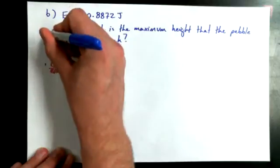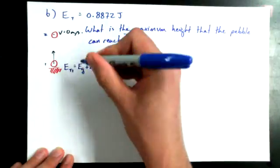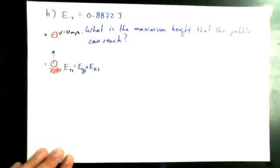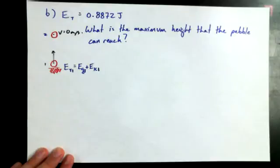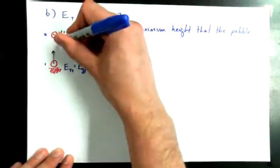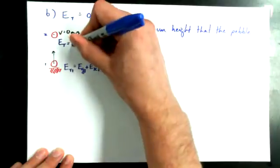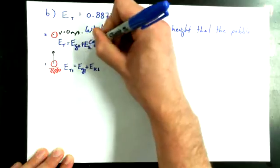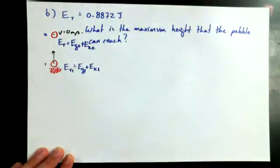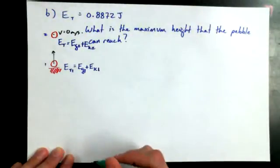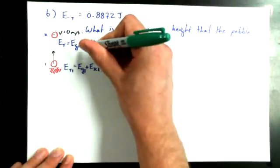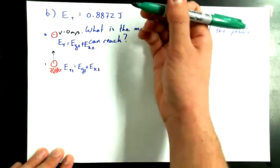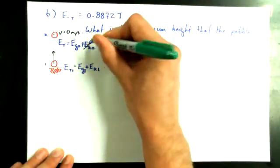At position one and at position two. So E total at position one is equal to the gravitational potential energy at position one plus the kinetic energy at position one. I'm just writing a one after the G and the K. And I could say up here, I've got E total equal to EG2 plus EK2. And what you guys just told me is that at the top, since the velocity is equal to zero, kinetic energy is equal to zero, right?